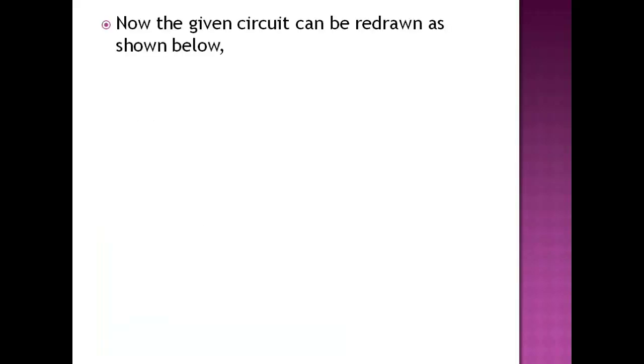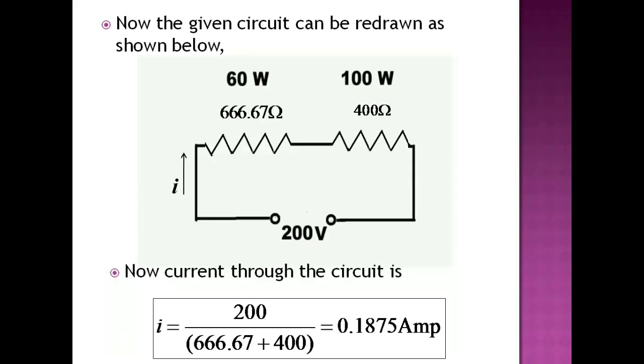After calculating the internal resistance of the bulb, now we can redraw this figure as shown below. Current flowing through the circuit is calculated using Ohm's law, I is equal to V upon R, where R is the total resistance of the circuit.